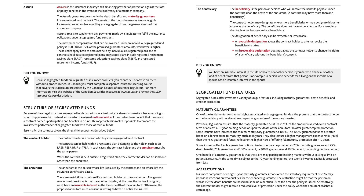The beneficiary is the person or persons who will receive the benefits payable under the contract upon the death of the annuitant. A contract may have more than one beneficiary. The contract holder may designate one or more beneficiaries or may designate his or her estate as the beneficiary. The beneficiary does not have to be a person — for example, a charitable organization can be a beneficiary. The designation of beneficiary can be revocable or irrevocable.